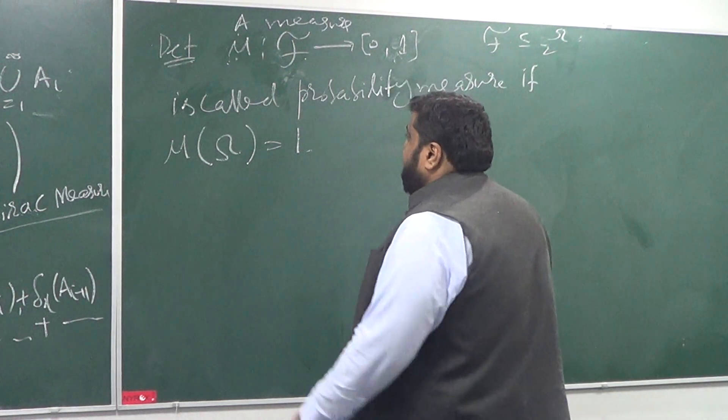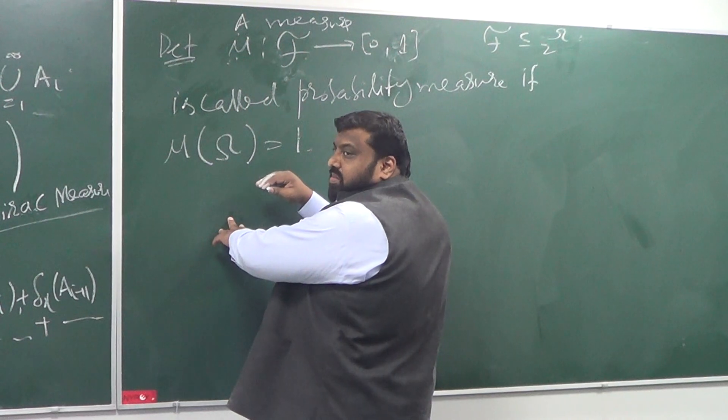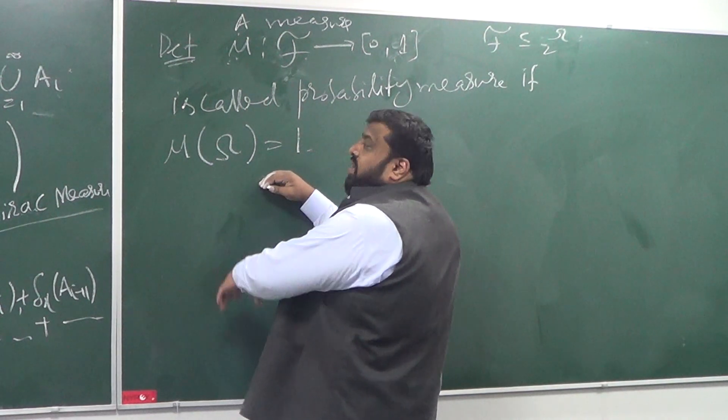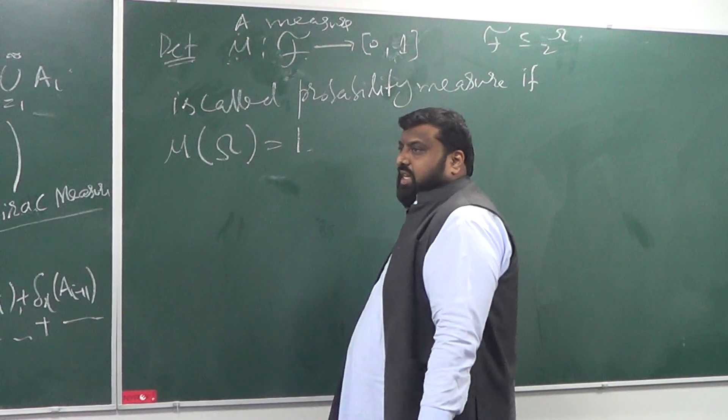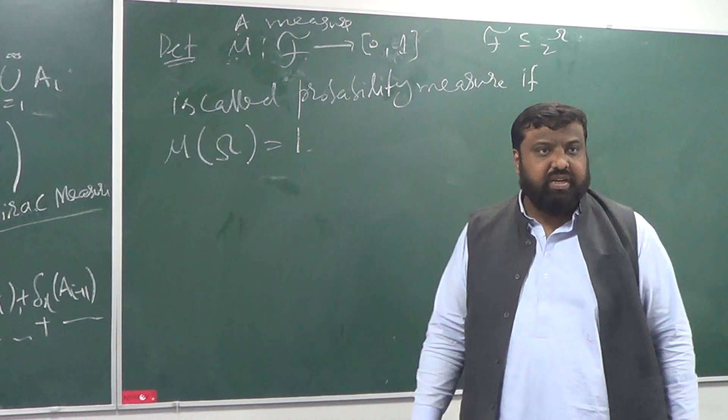Two properties, but if it satisfies the additional property that mu of omega is 1, then you call such measure as a probability measure.